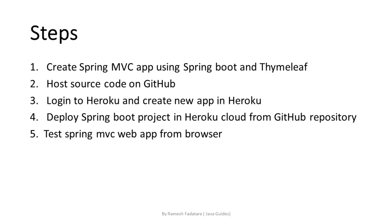To summarize: first, create a Spring Boot project; then create a GitHub repository and host the source code there; log into Heroku, create a new application, and use the GitHub deployment method to deploy the Spring Boot project from GitHub to Heroku. It's very simple. I hope you found this video useful — just follow the steps and you'll be able to successfully deploy your Spring MVC application on Heroku. Thanks for watching, see you in the next video.